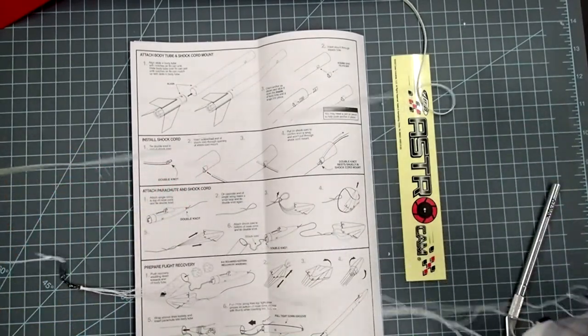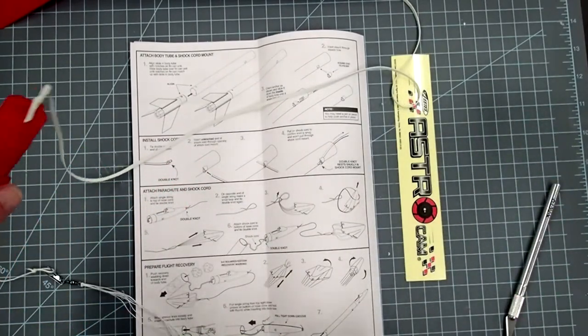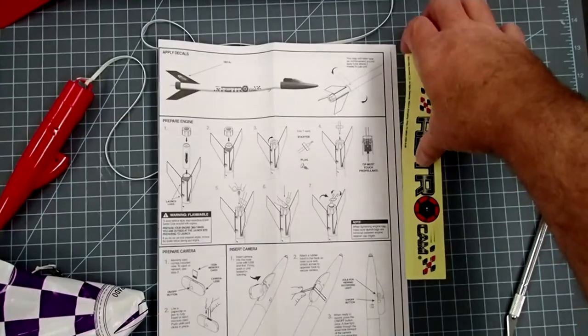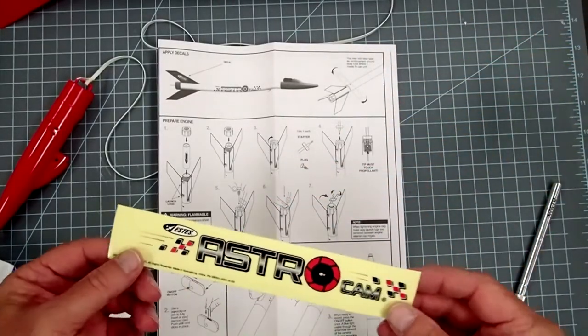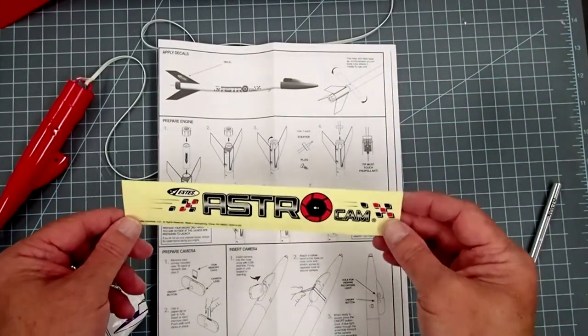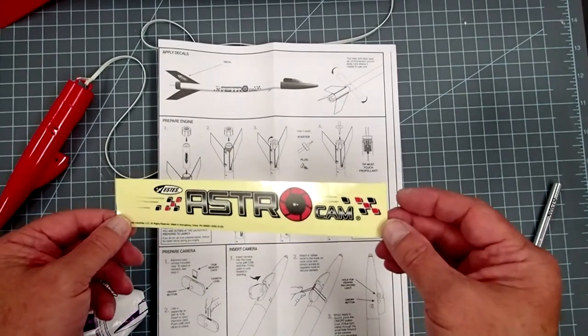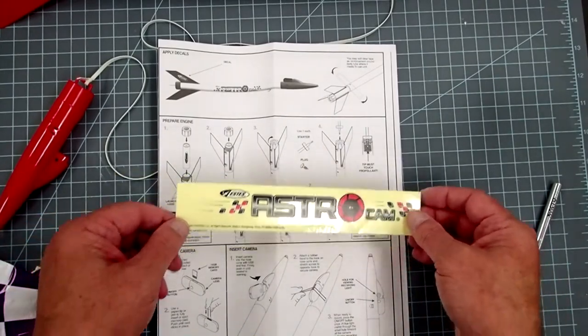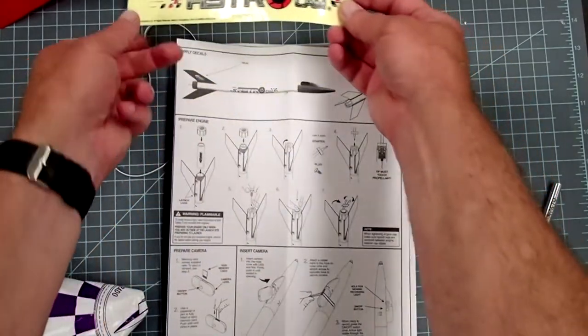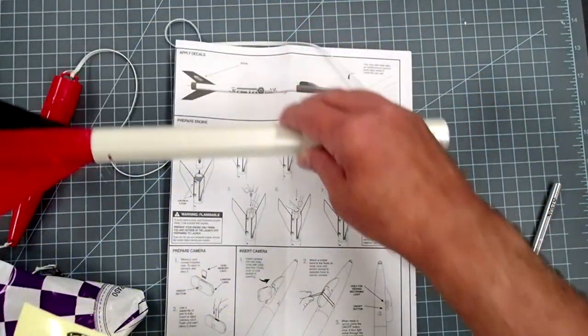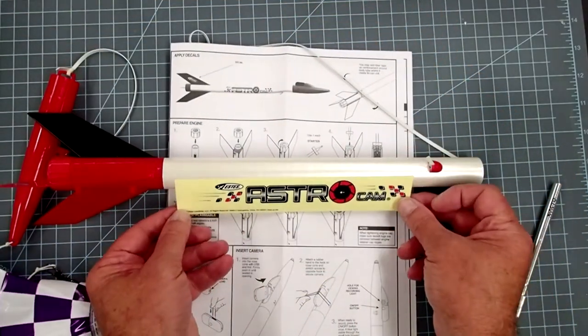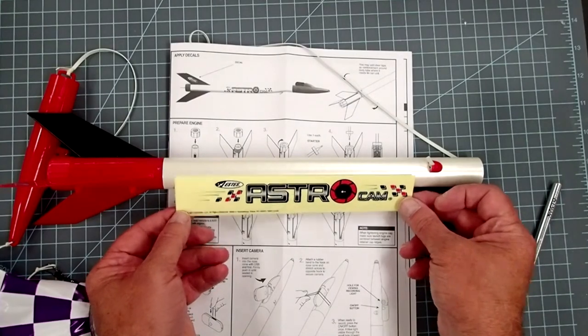Okay, so that is the assembly itself. Now, the last part of the building part of this is simply to add the decal here. It is a single self-stick decal, and as you can see here, it's meant to go along the length of the rocket. So, somewhere along here. Placement is up to you.